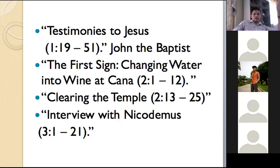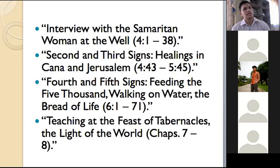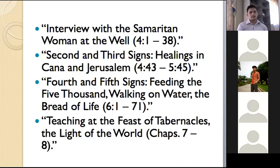You have the first sign — changing water into wine — with the clearing of the temple. And you have the interview with Nicodemus, then the interview with the Samaritan woman. Nicodemus represents the spiritual elite in Israel, the religious leaders — they were the insiders but then became the outsiders. And the outsiders became the insiders — the Samaritan woman was an outsider, a social outcast, but yet she accepted Jesus Christ. And so this is the irony of it.